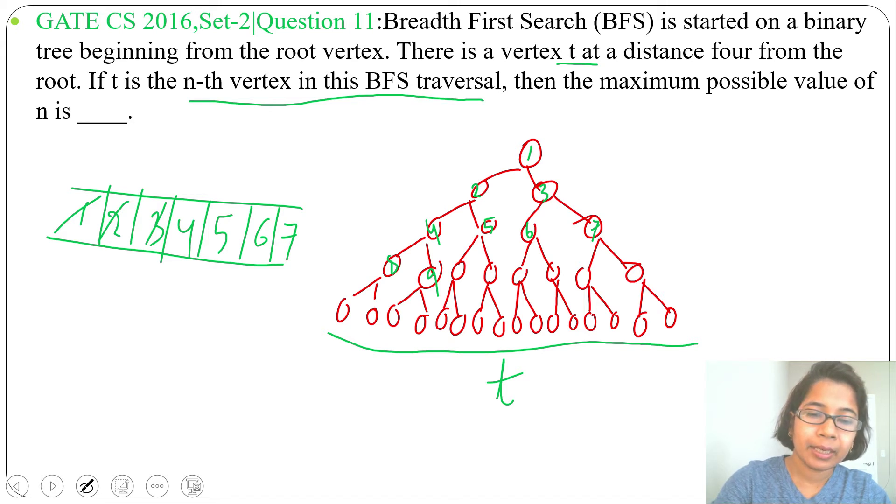if we are inserting t into the queue at the nth time, then the maximum possible value of n is what? So what can be the maximum possible value of t that we'll insert into the BFS queue? Maximum t can be this node.